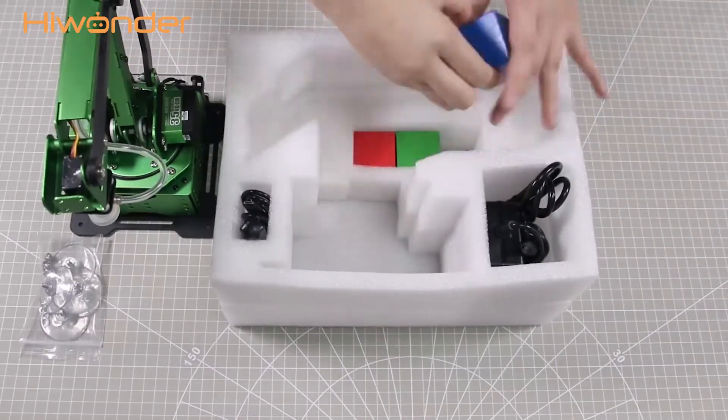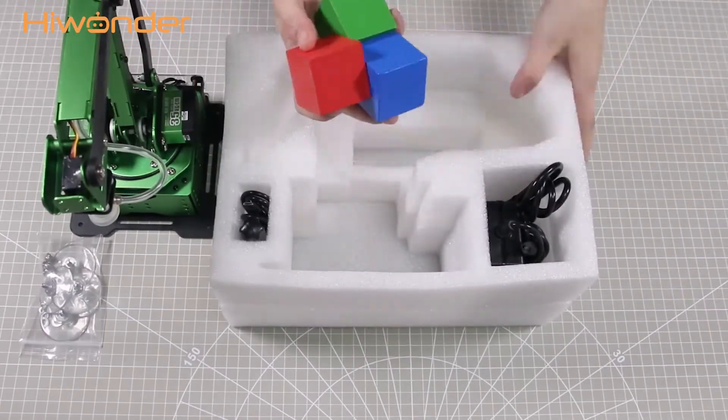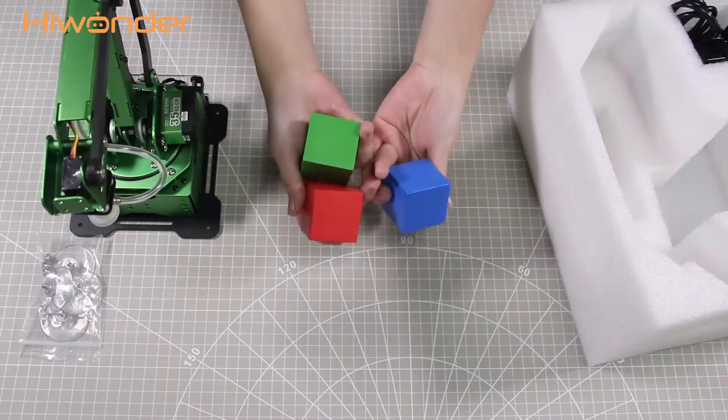There are three colored blocks, red, green, and blue here. They will be used as tools later.